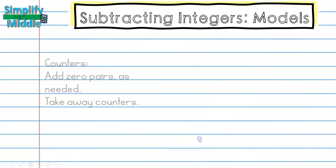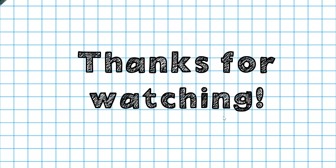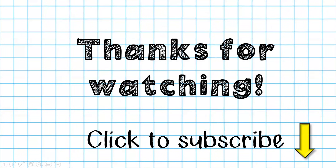Let's recap. We know that with counters, we will add zero pairs as needed and then take away the counters listed after the subtraction sign. For number lines, we'll draw the first number and then go the opposite direction of the second number. That wraps up our lesson. Thanks so much for tuning in. Feel free to click subscribe below so you can see this and other lessons. Until next time!